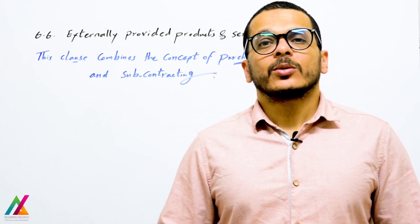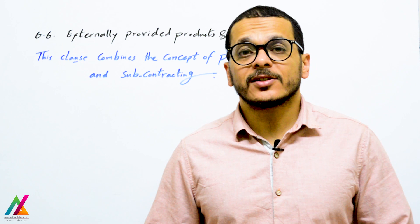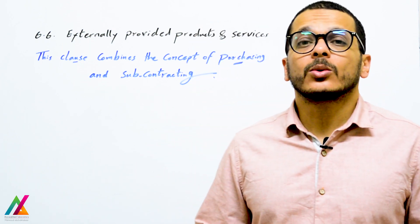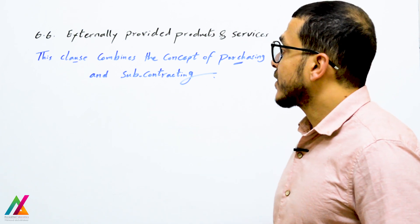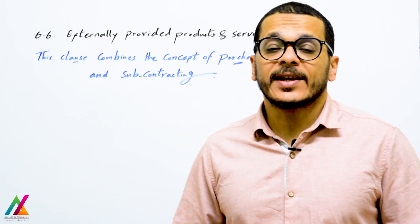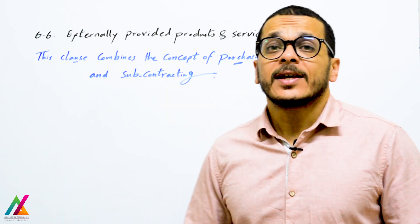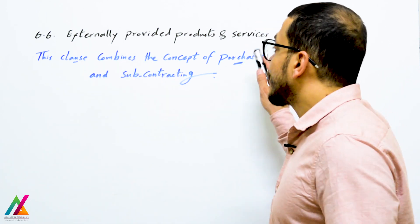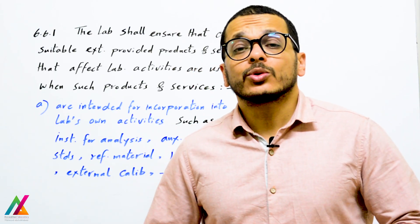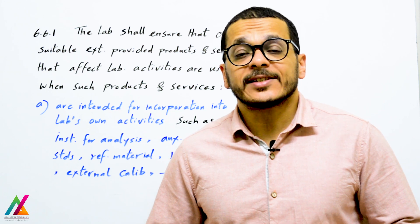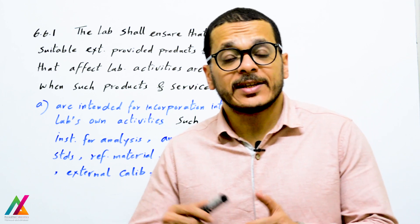Welcome back with a new lecture on ISO/IEC 17025:2017 edition. This is the last clause in resources requirements: 6.6, Externally Provided Products and Services. This clause combines the concept of purchasing and subcontracting together, to ensure that only suitable externally provided products and services that affect the lab activities are used.